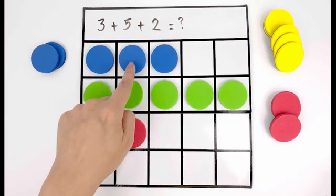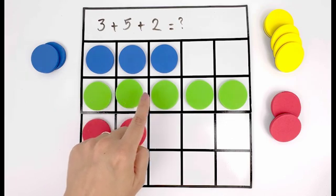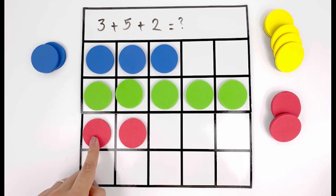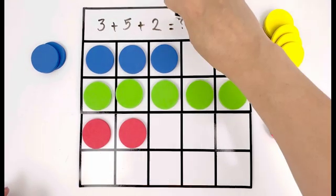Now if you add these all together it will be one, two, three, four, five, six, seven, eight, nine, ten. Three plus five plus two equals ten.